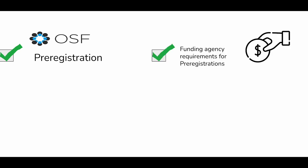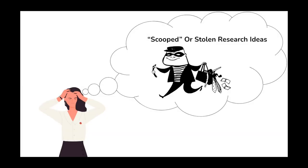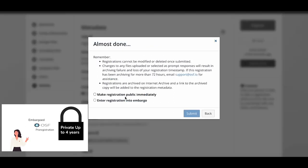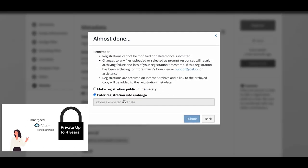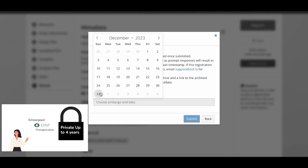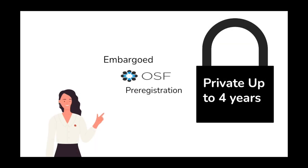Creating a registration before she begins the project helps Sophia if she decides to seek funding from funding agencies that require open science practices. Sophia has heard many stories about research ideas being stolen or scooped. If Sophia is worried about sharing her work or registration while it's still in progress, she can embargo access or temporarily make her registration private for up to four years. While embargoed, Sophia can create an anonymized view-only link for sharing with potential reviewers or funders.